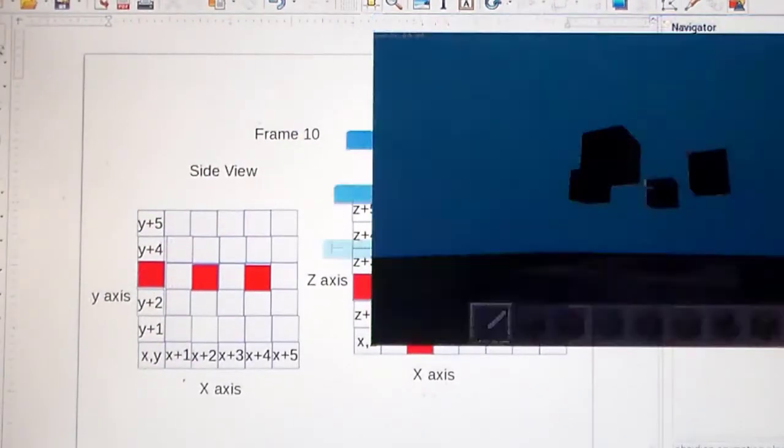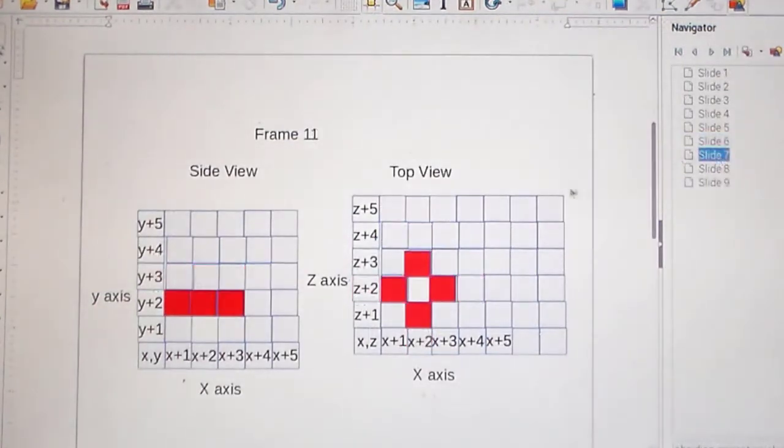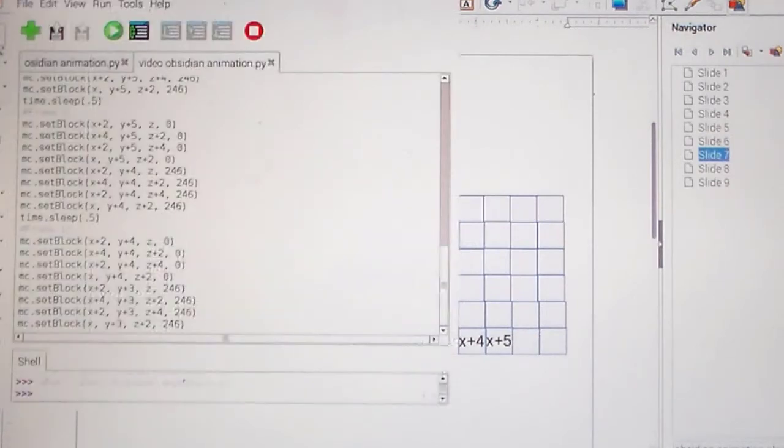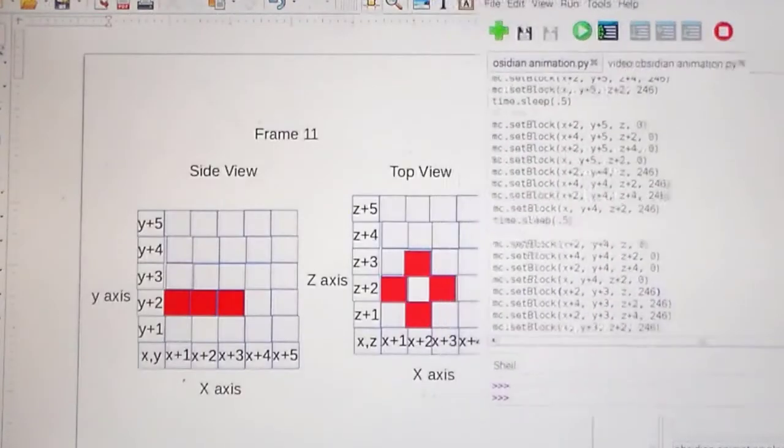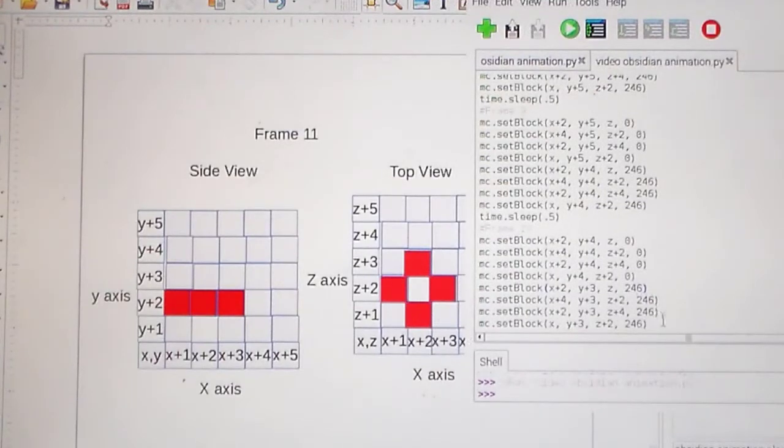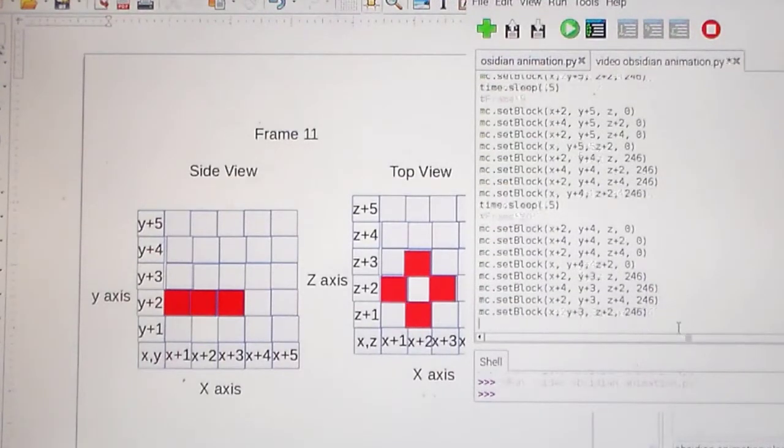Now what we need to do is we need to start coming back in towards the middle. Because our fountain comes up, spreads out, and then comes back together. So now we're going to bring this all in. So I'm going to adjust this so we can code all of these values, because it's a little bit more difficult.